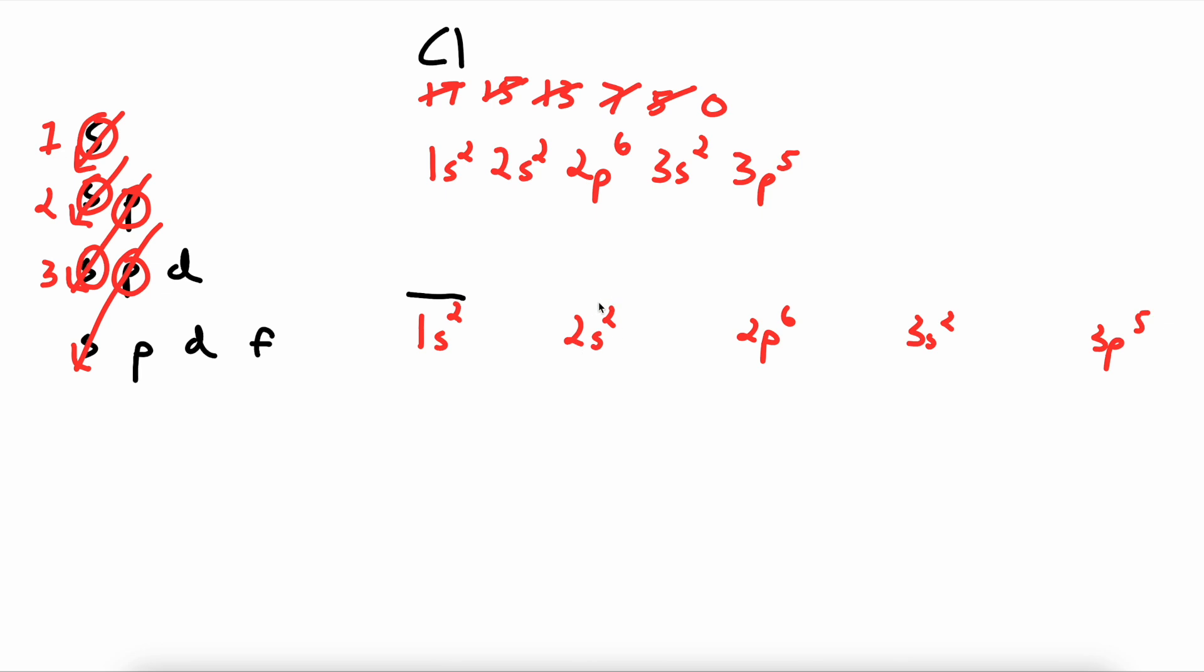One line for the S sublevel because it can only hold 2 electrons. Three lines for the P sublevel because it can hold 6 electrons. Now that all our orbitals are drawn, let's draw in the electrons.